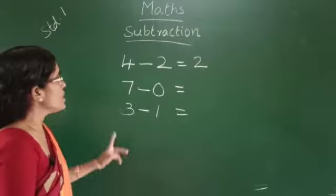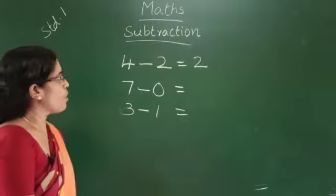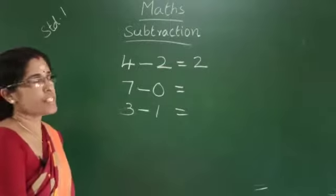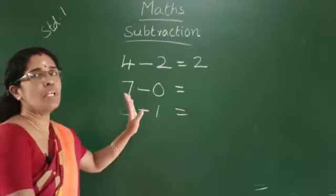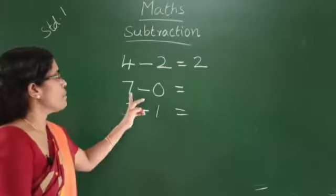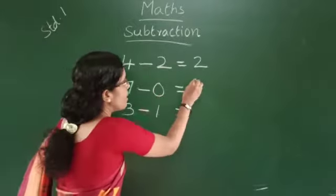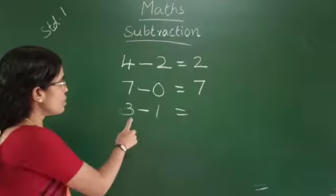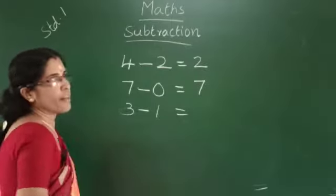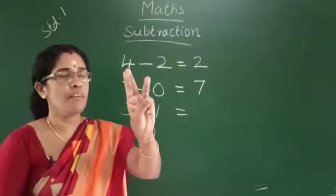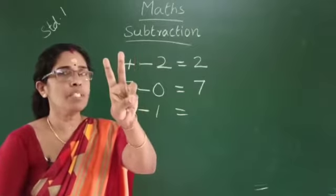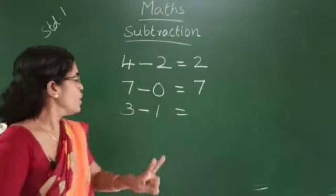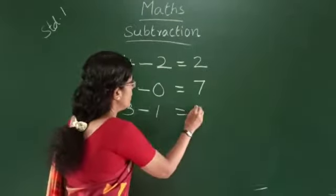Next, 7 minus 0. 7 minus 0 is equal to 7. Next, 3 minus 1. We have 3 fingers, fold 1 finger. How many fingers remaining? 2. 3 minus 1 equals 2.